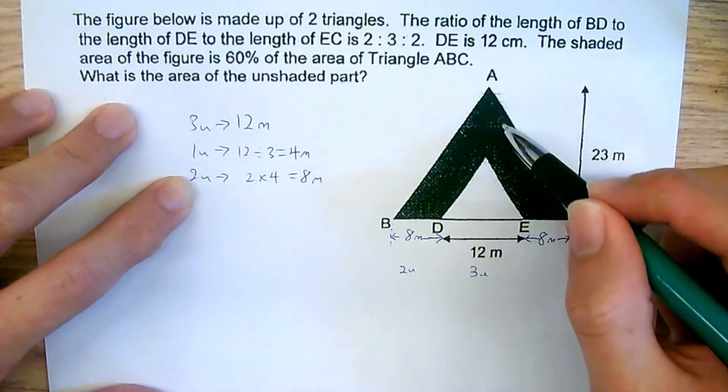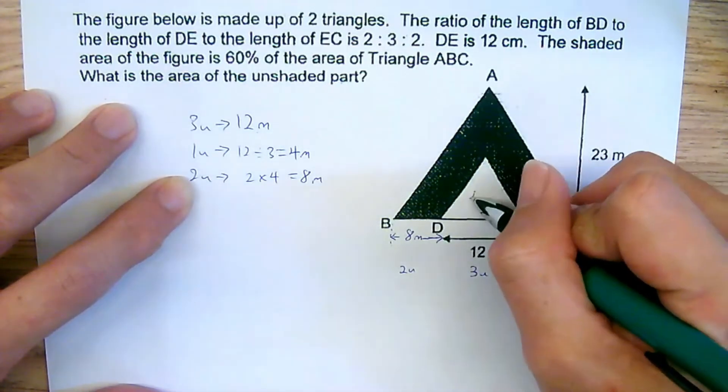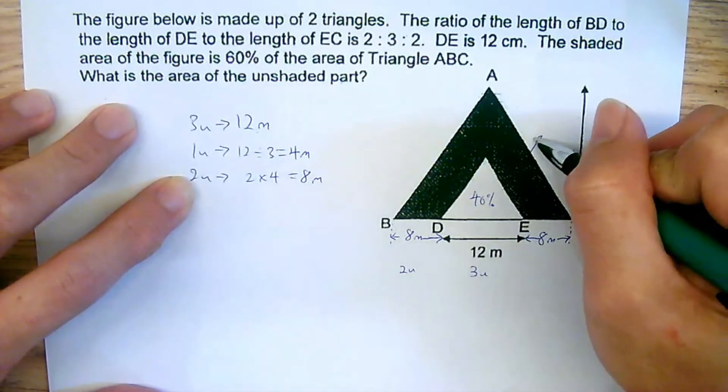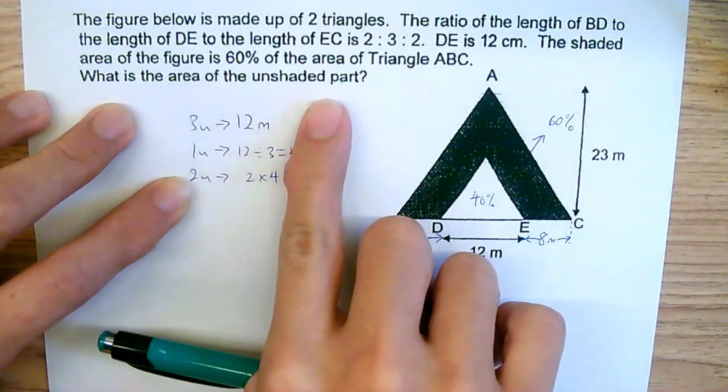So out of this entire triangle, the shaded region represents 60% of the entire thing. Which means this must be 40%. So this one is 60%. Now the question is asking for what is the area of the unshaded part.